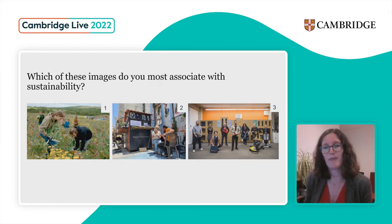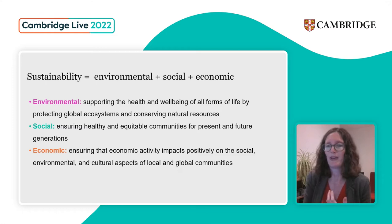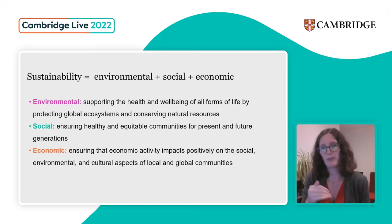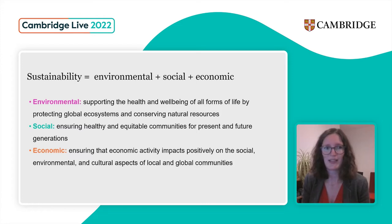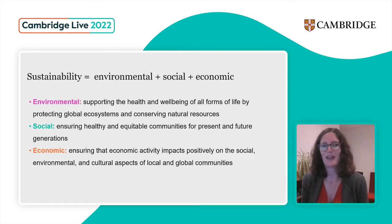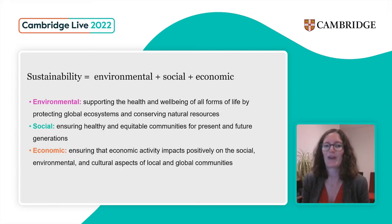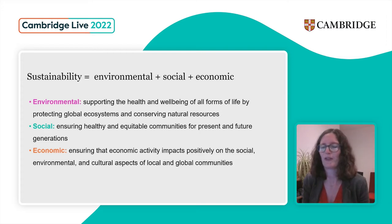What we were illustrating here is the fact that sustainability is actually more than just about the environment — it's about social and economic aspects as well. Environmental sustainability is about supporting the health and wellbeing of all forms of life and protecting global ecosystems and conserving natural resources. Social sustainability is about ensuring healthy and equitable communities for present and future generations. Economic sustainability is about ensuring that economic activity impacts positively on the environment and the cultural aspects of local and global communities.